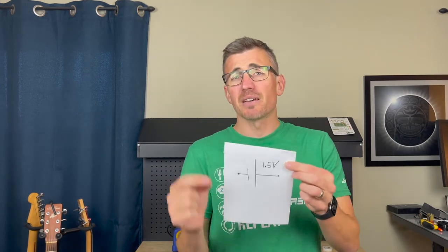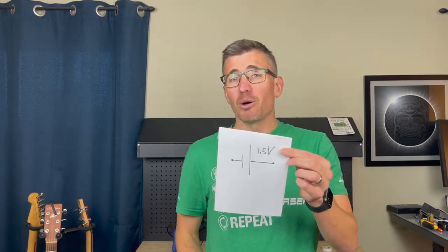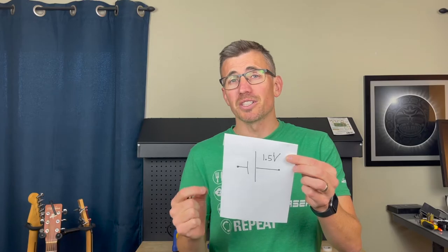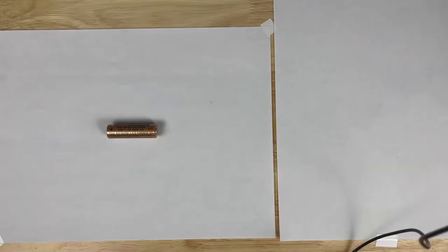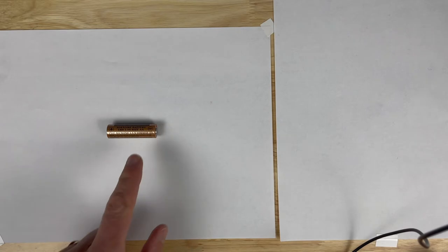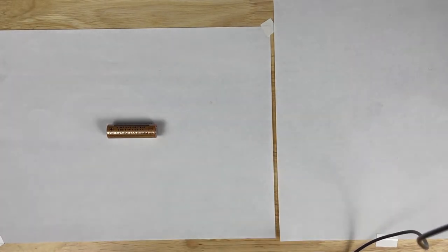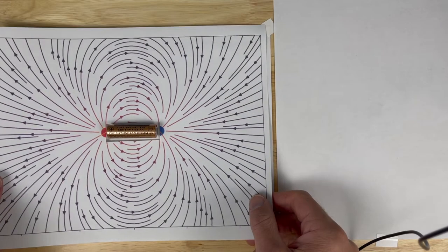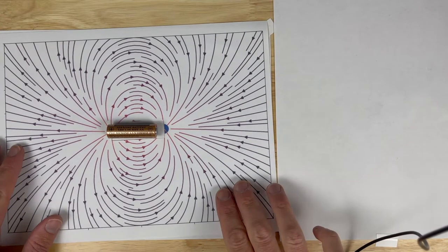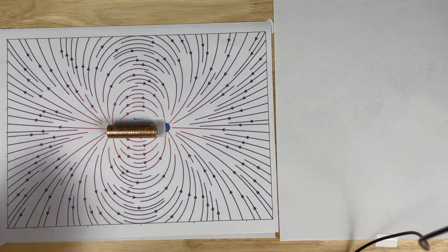Before we get into that, let's take a brief pause and think about what a voltage actually is. What is this voltage that our real voltage source is creating here? Well, we can't see it, but surrounding this battery everywhere is an electric field. If we could visualize it, it would look something like this — these arrows represent the directions of the electric field.